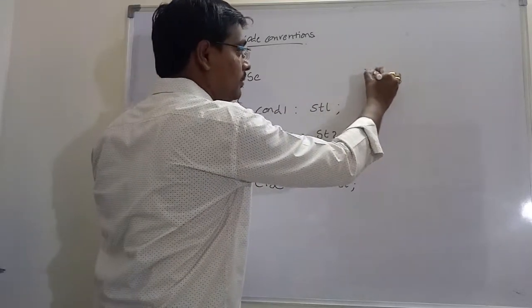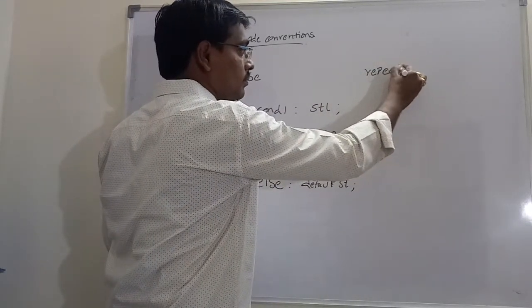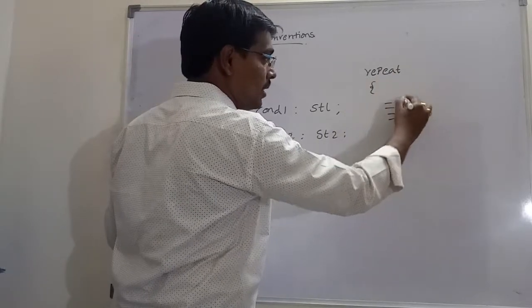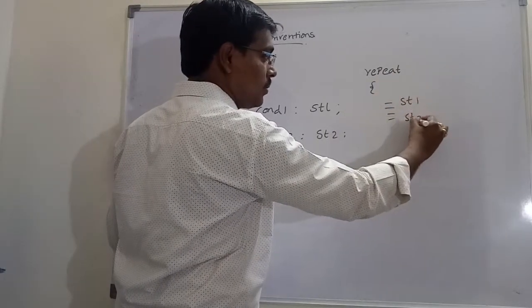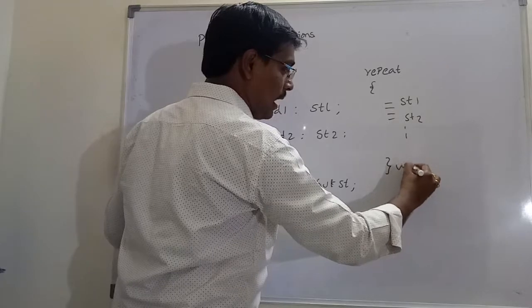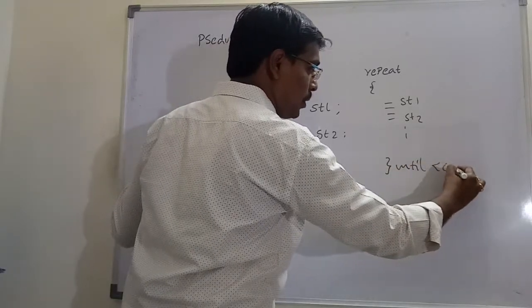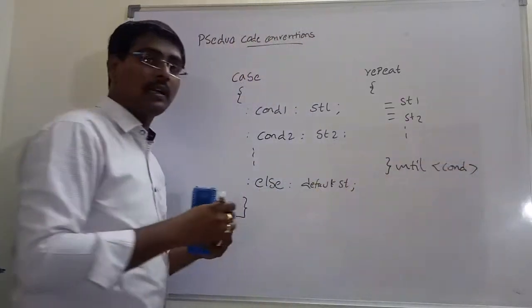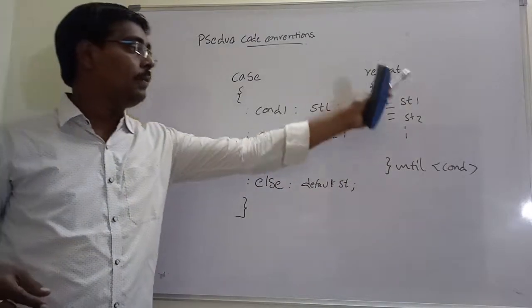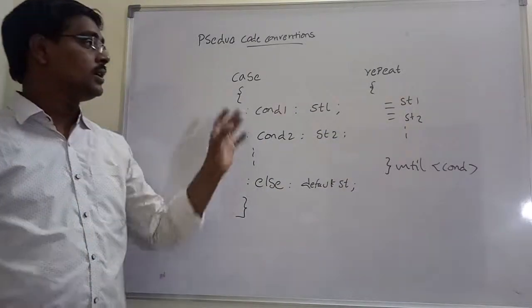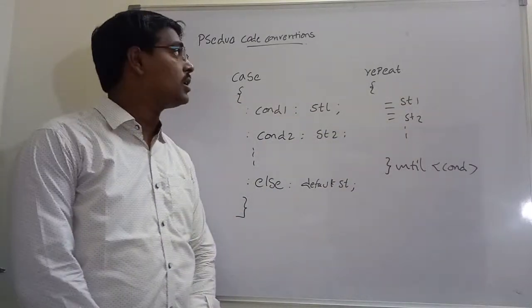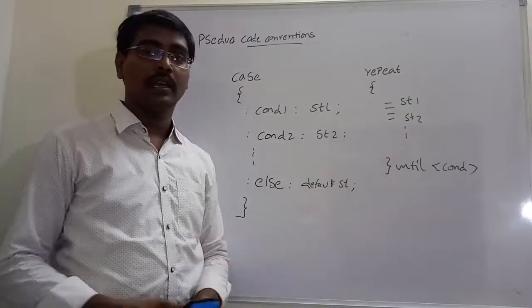Next, repeat. Repeat some number of statements, suppose statement 1, statement 2 and so on, until particular condition. Until the condition is true, we are repeating these set of statements. These are some of the pseudocode notations used for designing an algorithm.